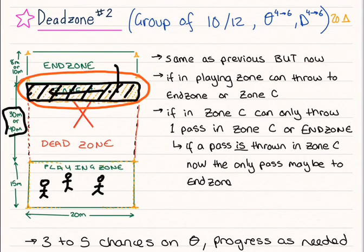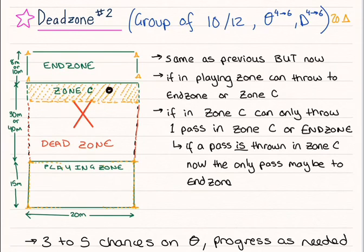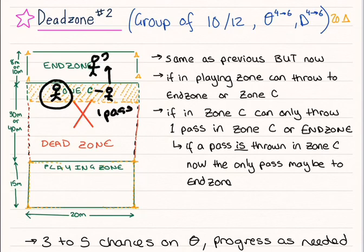Then it must go into the end zone. So any player receiving it in area can now either throw one pass to someone else in this area, or they can throw it straight into the end zone. The difference is if the disc goes this way, this player now may only throw it into the end zone.